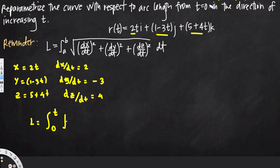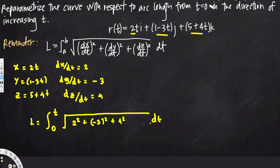Plugging in our values: the integrand becomes the square root of (dx/dt)² + (dy/dt)² + (dz/dt)², which is √(2² + (−3)² + 4²). Simplifying: 4 + 9 + 16. Now 16 + 9 = 25, and 25 + 4 = 29, so we get √29.